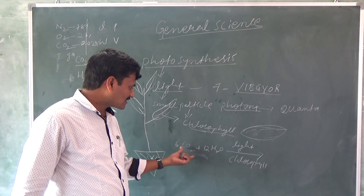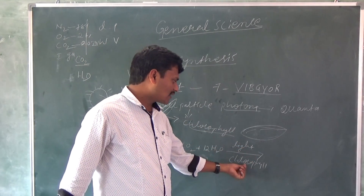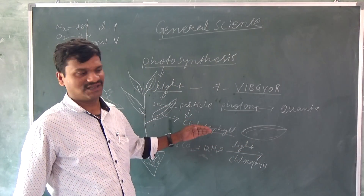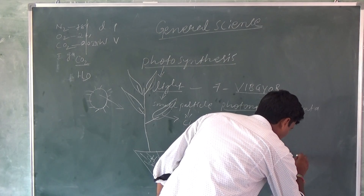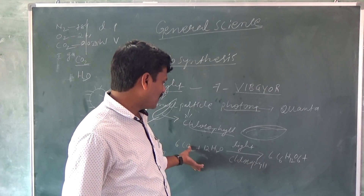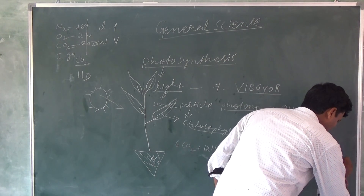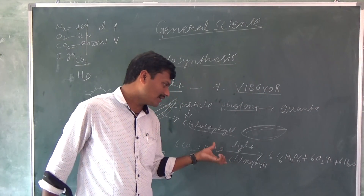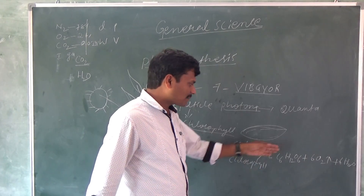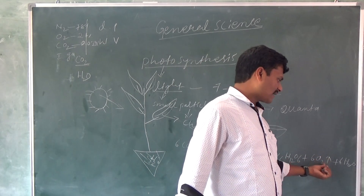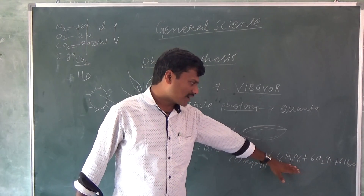These are the raw materials for photosynthesis: carbon dioxide, water, light from sunlight, and chlorophyll present in the leaf. By taking these raw materials, the plants prepare food — that is called glucose, C6H12O6. In this process, one gas is liberated — oxygen. Water is also formed. So recall: carbon dioxide plus water, in the presence of light and chlorophyll, the plants prepare glucose, oxygen is released, and water is also formed. These are the raw materials and end products of photosynthesis.